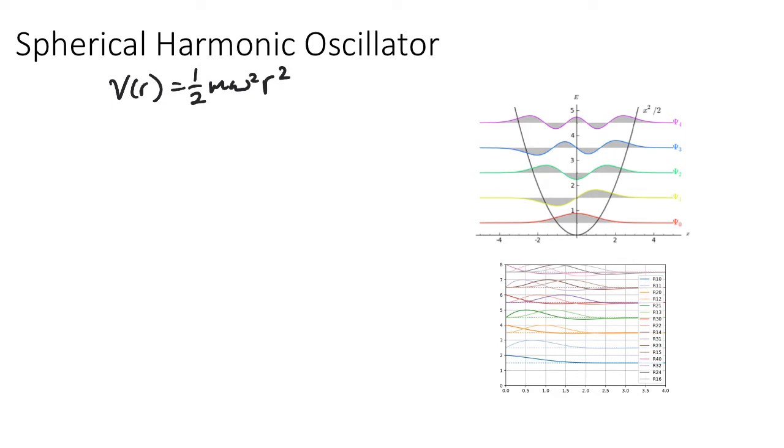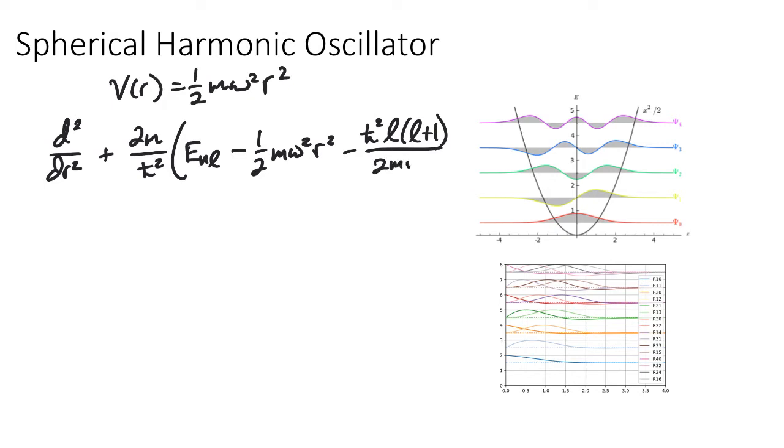And then the equation, the Schrodinger equation, still has its angular solutions of the spherical harmonics, but the radial equation then becomes d²/dr² + 2m/ℏ² times the energy of the state with nL minus ½mω²r², that's the potential term, minus ℏ²L(L+1)/2mr². That whole operator acts on the radial function to give 0.